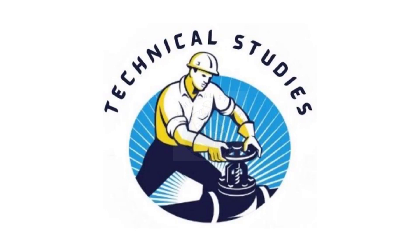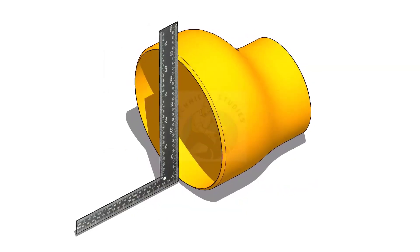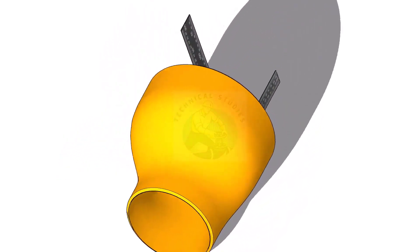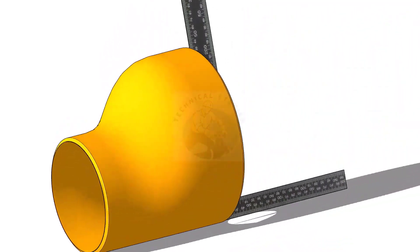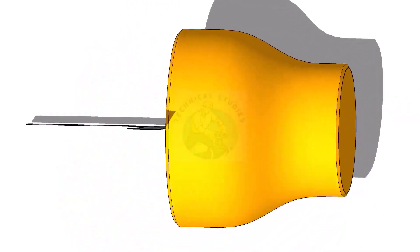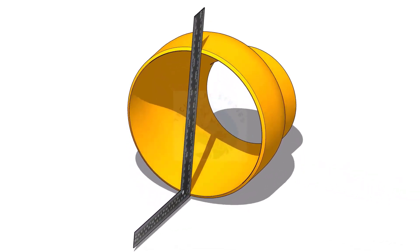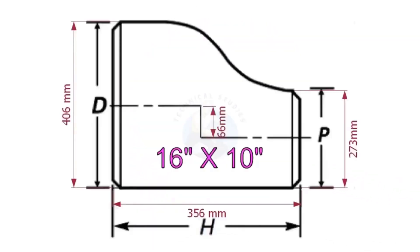An eccentric reducer is a fitting used in piping systems between two pipes of different diameters. The same fitting can be used in reverse as an eccentric increaser or expander. I had observed for some fitters and fabricators having difficulty marking the center line of an eccentric reducer. Today I will show you how to mark the center lines of an eccentric reducer in a step-by-step procedure.